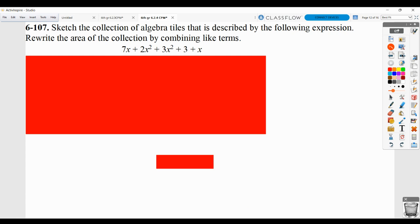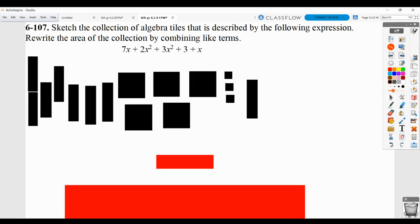For 6.107, they wanted you to sketch this collection and then rewrite them by combining like terms. So we need to have 7x tiles. So I have them sketched here. We need to have 2x squared tiles. So those are here. Normally those would be a little bit bigger, right? But mine are not necessarily drawn to scale. And then 3x squared tiles here, but probably should be a little bit bigger. 3 unit tiles and another x tile. So you could use your e-tools for this and then do a screenshot of it. That might be a very smart way to go. And then everything would be to proportion.